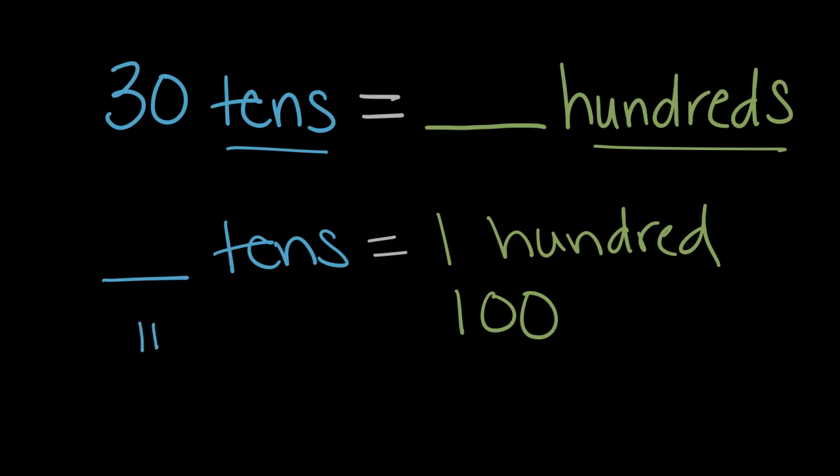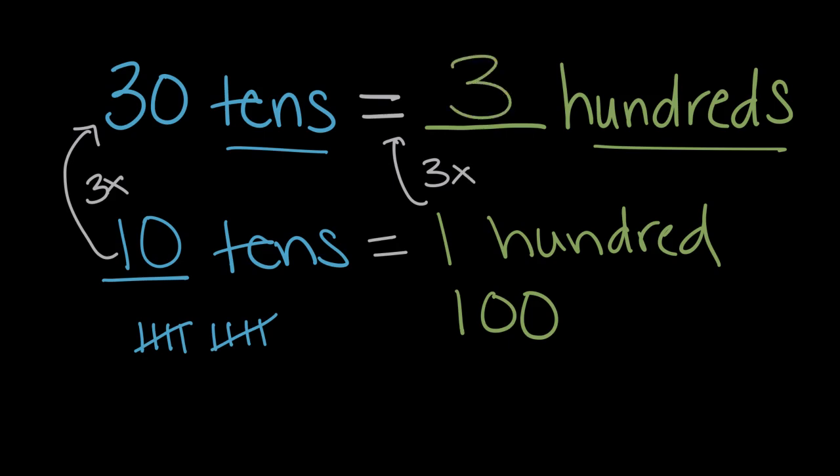One ten is ten, twenty, thirty, forty, fifty, sixty, seventy, eighty, ninety, one hundred. So we got to a hundred and it took us ten tens. There are ten tens in one hundred. So if there's ten tens in one hundred, how many hundreds are in thirty tens? Well to get from ten tens to thirty tens, that's three times as many tens. So we'll also have three times as many hundreds or three hundreds. Thirty tens is three sets of ten tens. Ten tens are a hundred. So another way to think of that is thirty tens is three sets of hundreds or three hundreds.